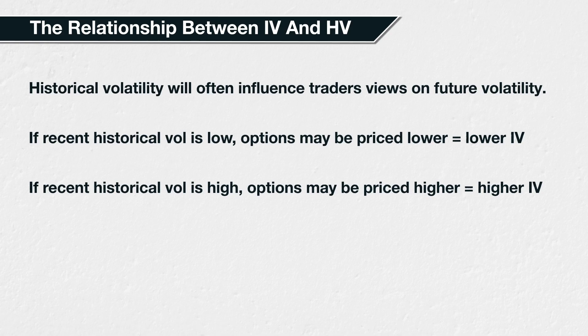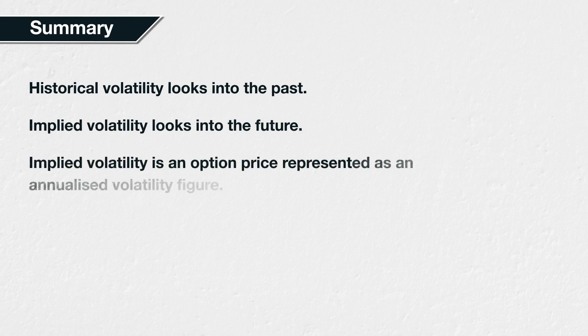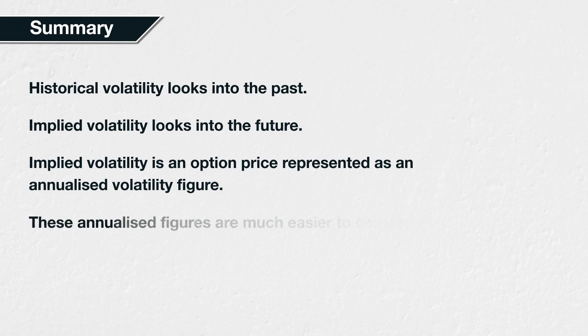So, while they are separate concepts, it's worth being aware that historical volatility will often affect traders' views of how price is likely to behave in future, and therefore the prices they are willing to buy and sell options at, and the related implied volatilities. In summary: historical volatility looks backwards into the past and measures the volatility that has already happened. Implied volatility looks forwards into the future and measures the market's current view of future volatility. Implied volatility is an option price represented as an annualized volatility figure. Assuming all other parameters remain the same, a higher option price translates into a higher implied volatility, and a lower option price translates into a lower implied volatility. By looking at prices in this annualized form, it is much easier to make comparisons.